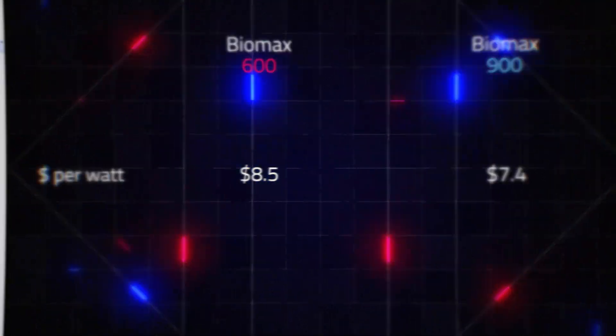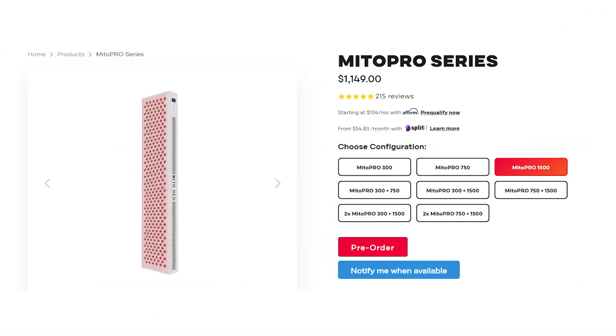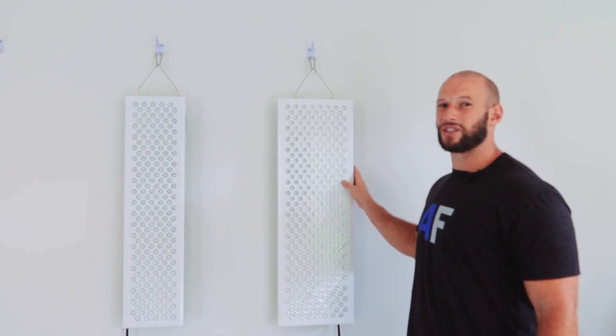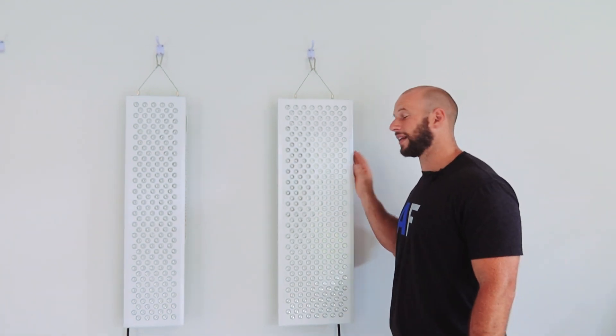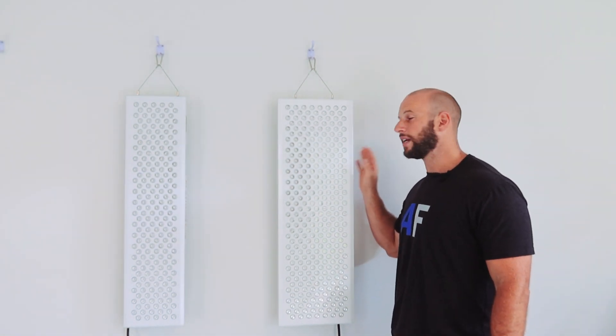A close second to that was the Mito Red MitoPRO 1500 with an $8 figure. So what that means is you're getting much more bang for your buck. You're getting a lot more power for your dollar with the Biomax 900 over the 600.